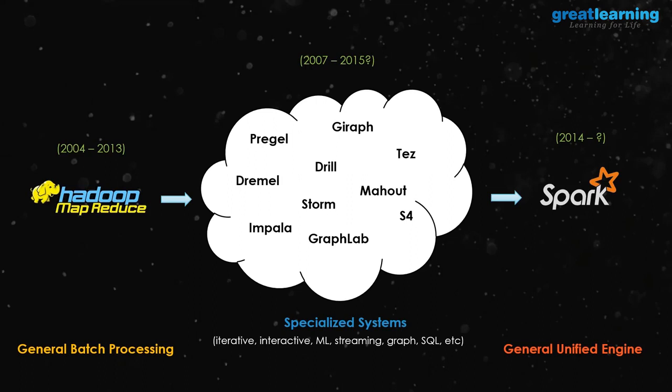For graph processing there was GraphLab and Pregel — those were the tools used for graph processing on traditional Hadoop. Then people wanted to do streaming real-time data analysis, and that is where Storm came in. So over a period of eight to ten years, people started developing different tools to handle different workloads.